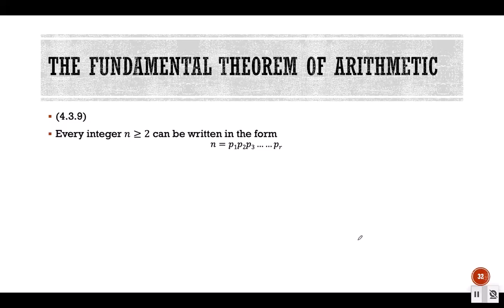Now we are going to see some properties of prime numbers. One fundamental theorem of arithmetic states that every integer n greater than or equal to 2 can be written in the form p1 × p2 × p3 × ... × pr, where p1, p2, p3, ..., pr are all prime numbers. So every integer can be represented as a product of some prime numbers.